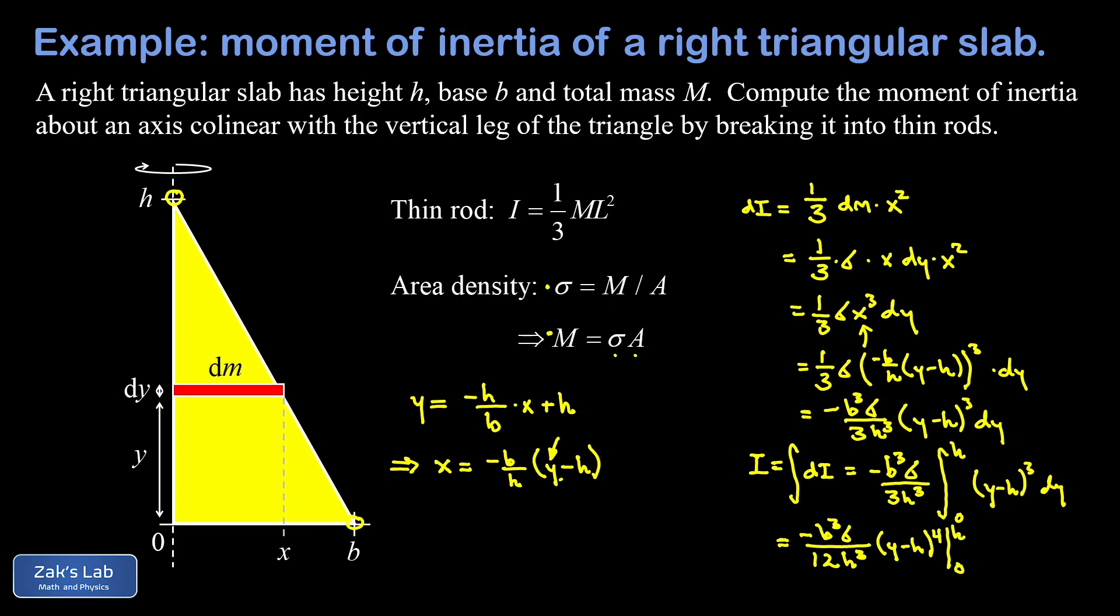When I sub in the upper limit there, I get h minus h - in other words zero - so I'm not concerned with that limit. Then I subtract what I get when I sub in the lower limit. So when I sub in y equals zero, I end up with just the positive h to the fourth there, and three of those factors of h are going to cancel out with the ones in the denominator.